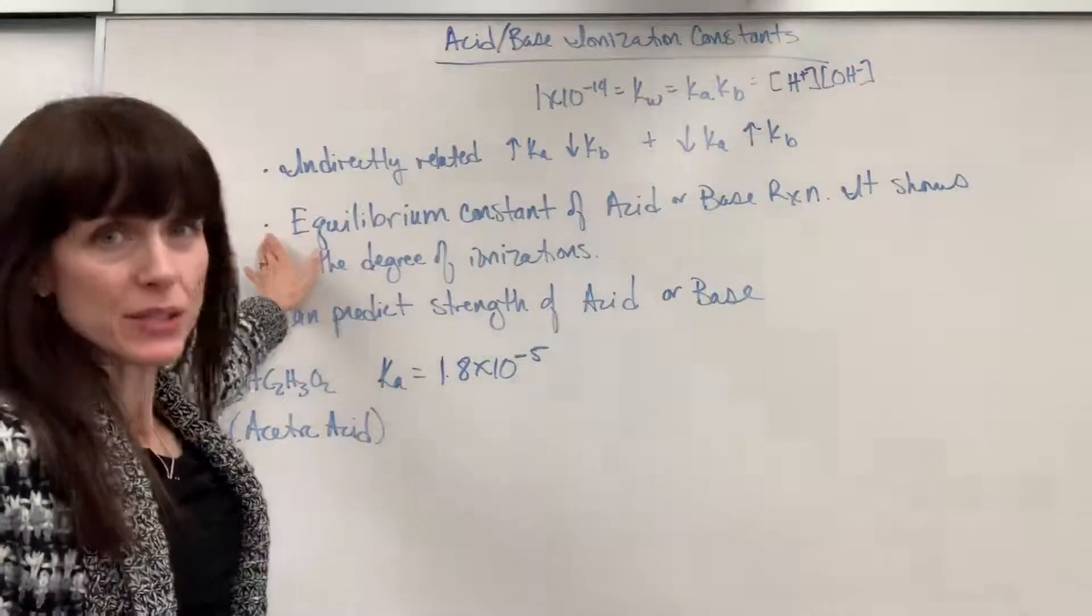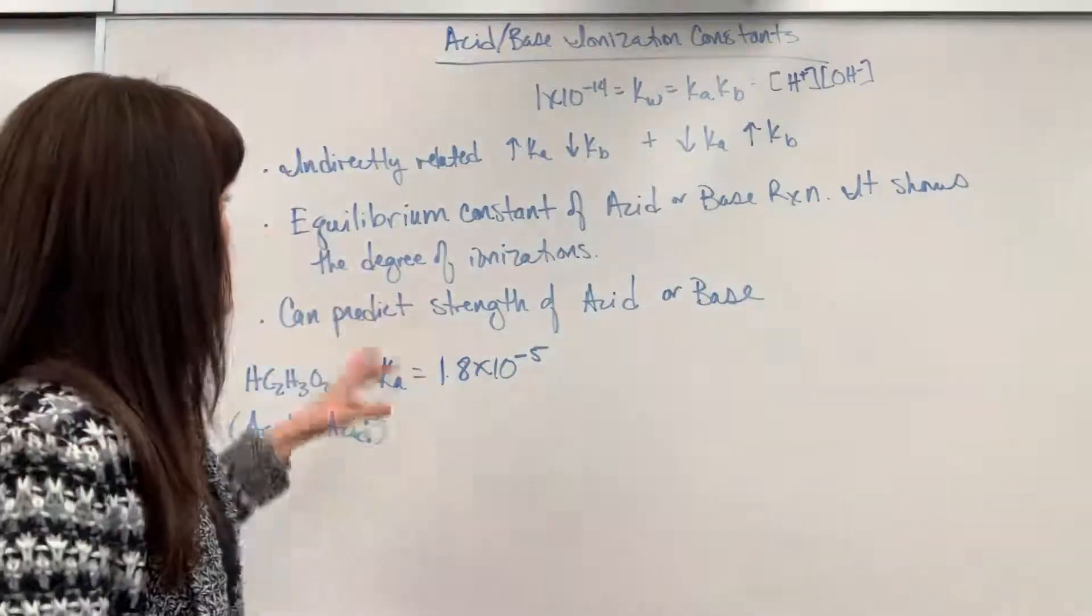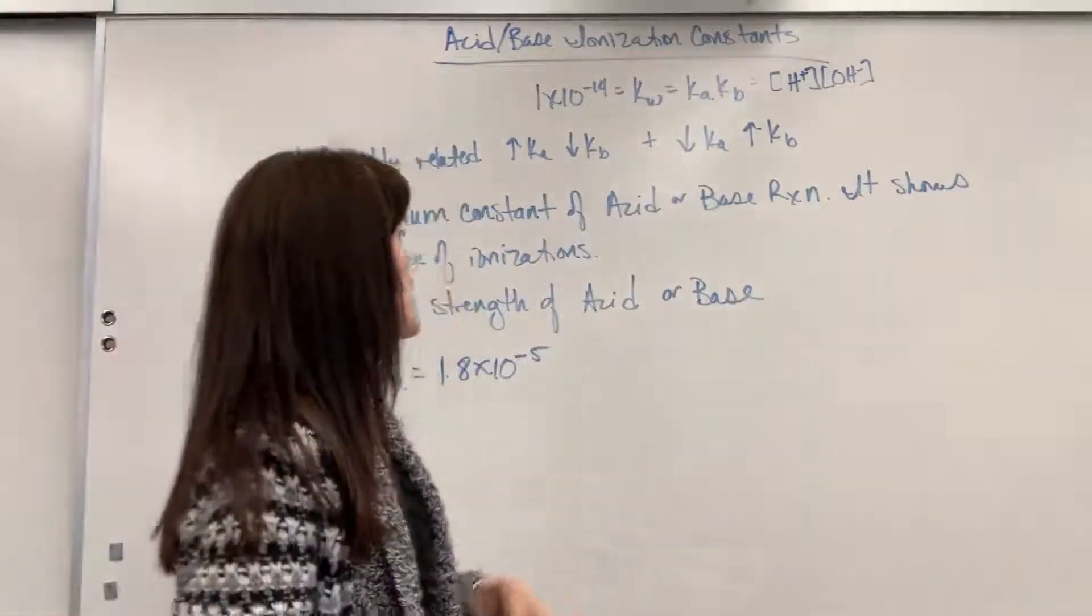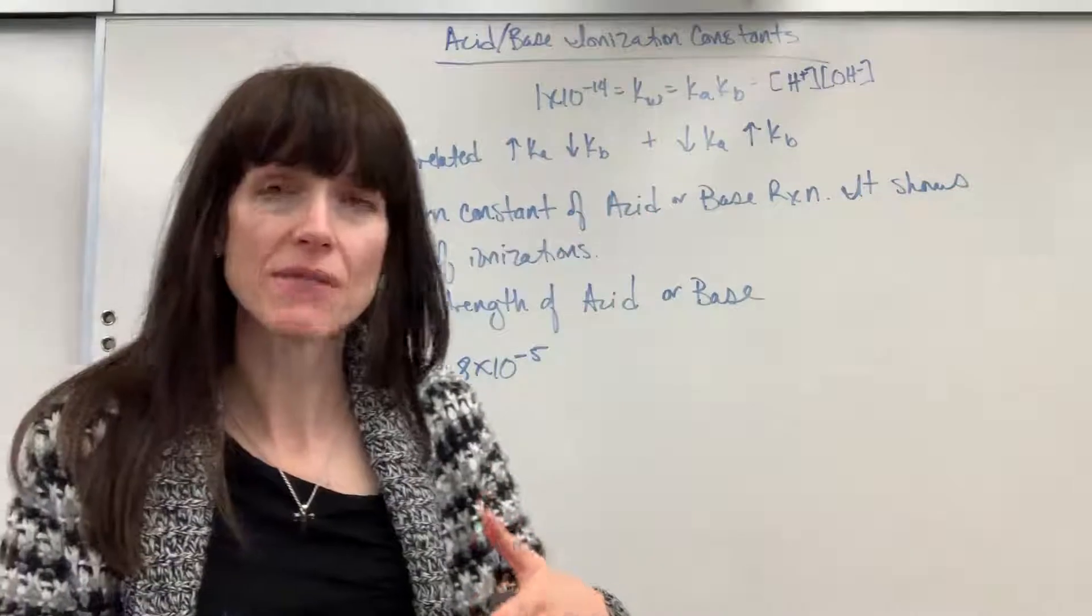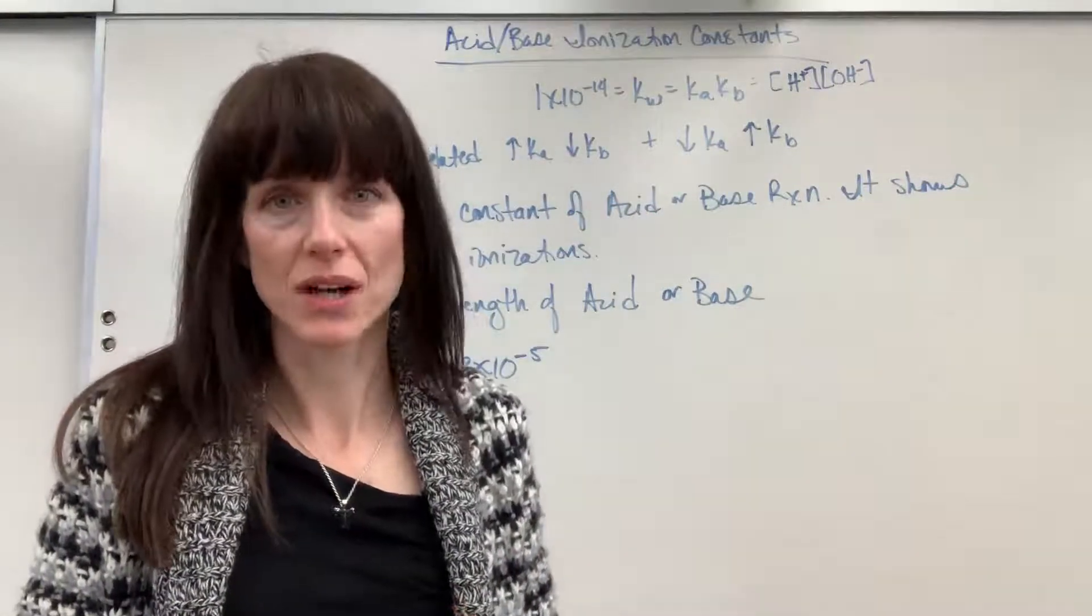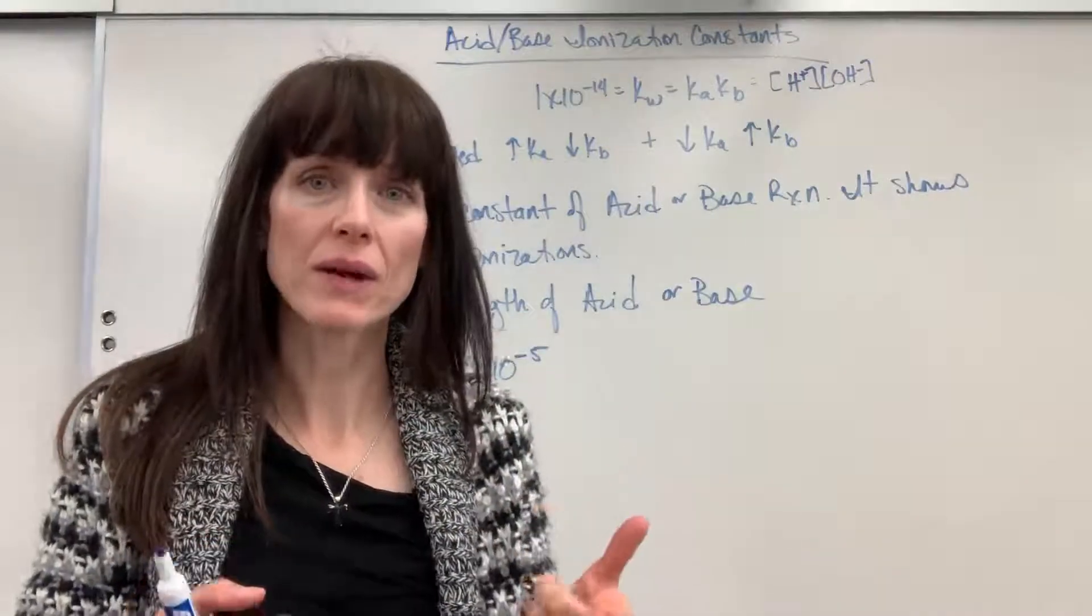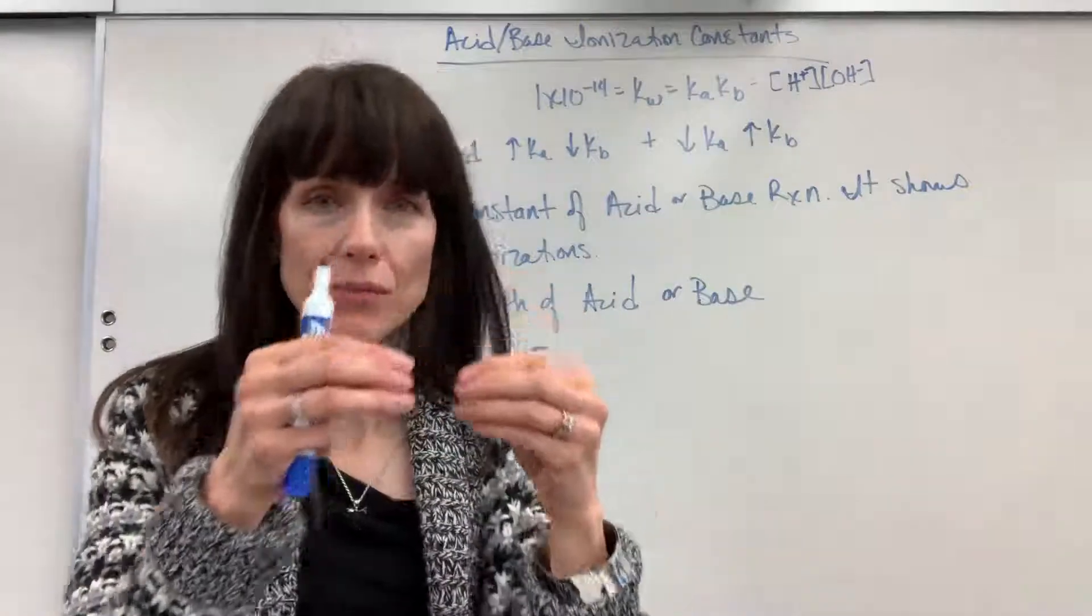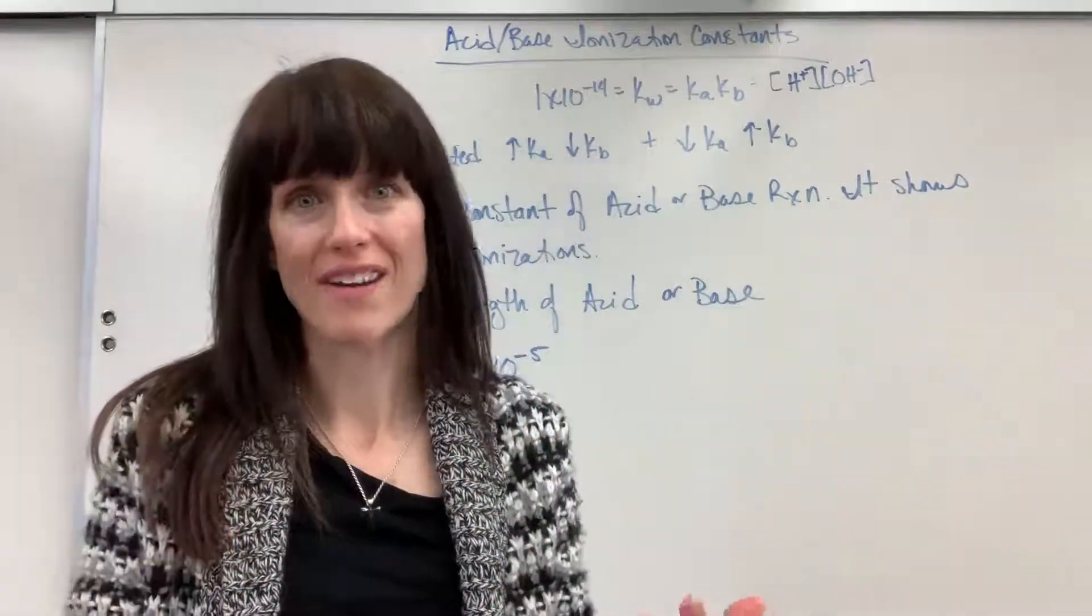Now, I had used two terms, equilibrium constant, ionization constant. Equilibrium constant, that's our umbrella term for this K value, but we will be even more specific and use the term ionization constant. And that word ionization, it tells us the degree at which the acid or the base ionizes. The degree at which it breaks apart. The degree at which it reacts with water.